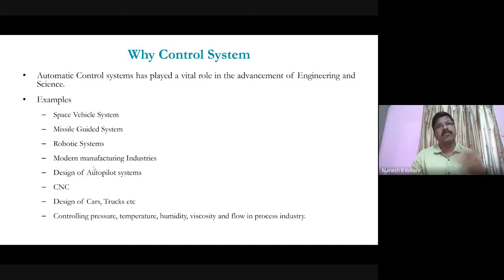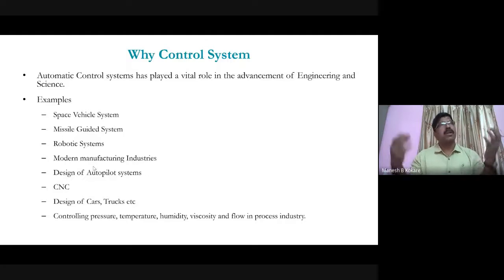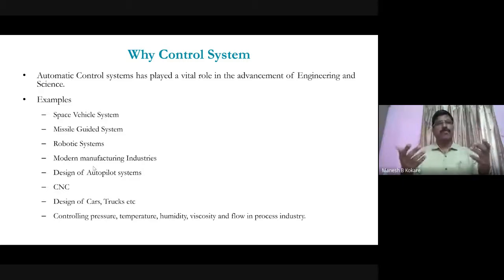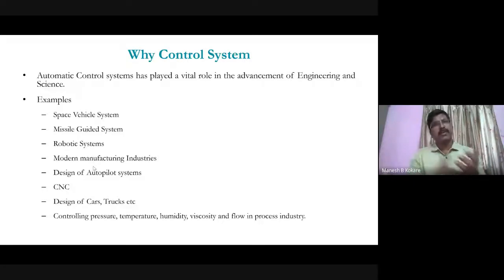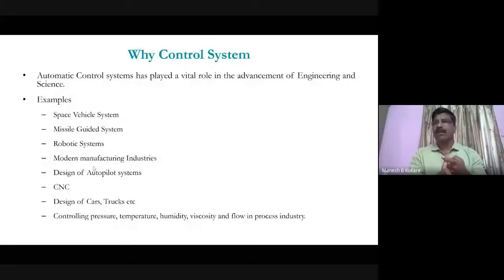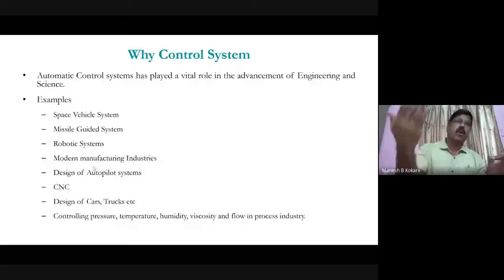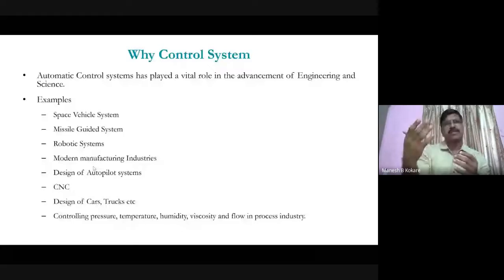A television, radio, geyser, and air conditioner are all control systems. If you set your AC to 25°C, it maintains that temperature — switching on when the room goes above it and off when it goes below. Vehicles such as trucks, buses, cars, and motorbikes also use control systems everywhere.